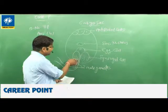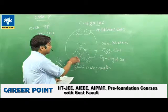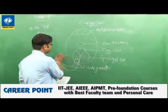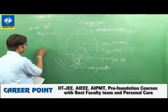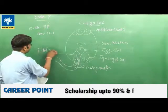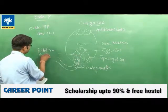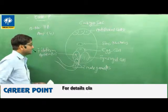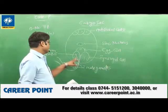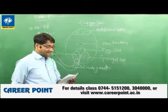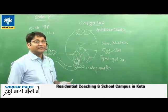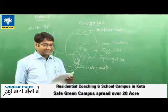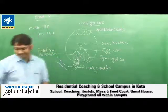The entry of the pollen tube into the embryo sac through the synergid is guided by the filiform apparatus. So the filiform apparatus helps in guiding the entry of the pollen tube into the embryo sac. Therefore, the correct answer to this question is option four: guide the entry of pollen tube. Thank you very much.